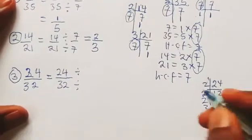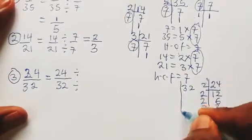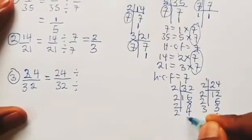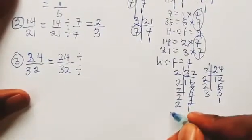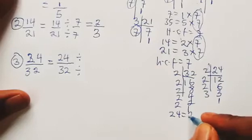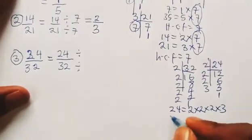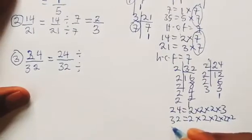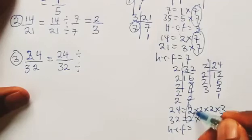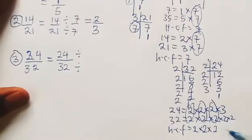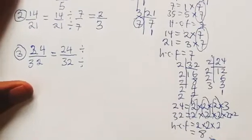For 32, we divide by 2 to get 16, then 8, then 4, then 2, then 1. So for 24 we have 2 × 2 × 2 × 3, and for 32 we have 2 × 2 × 2 × 2 × 2. The HCF comes from the common factors: grouping three 2s gives us 2 × 2 × 2 = 8.